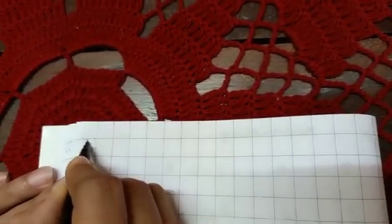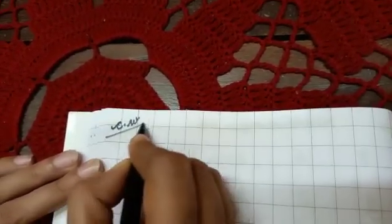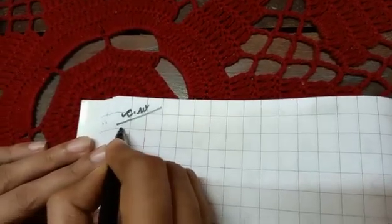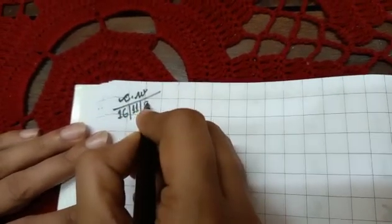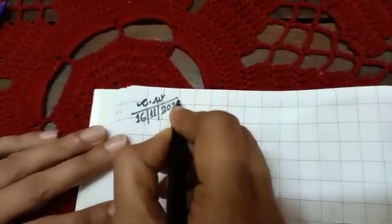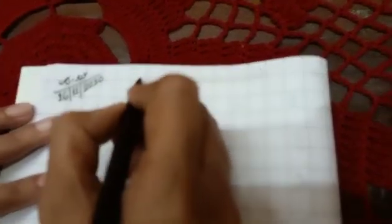So children, take out your copy, pencil, eraser and get ready. Children, here you will write CW date. C dot W and today's date. Today's date is 16 oblique 11 oblique 2020 written. Now here you will write